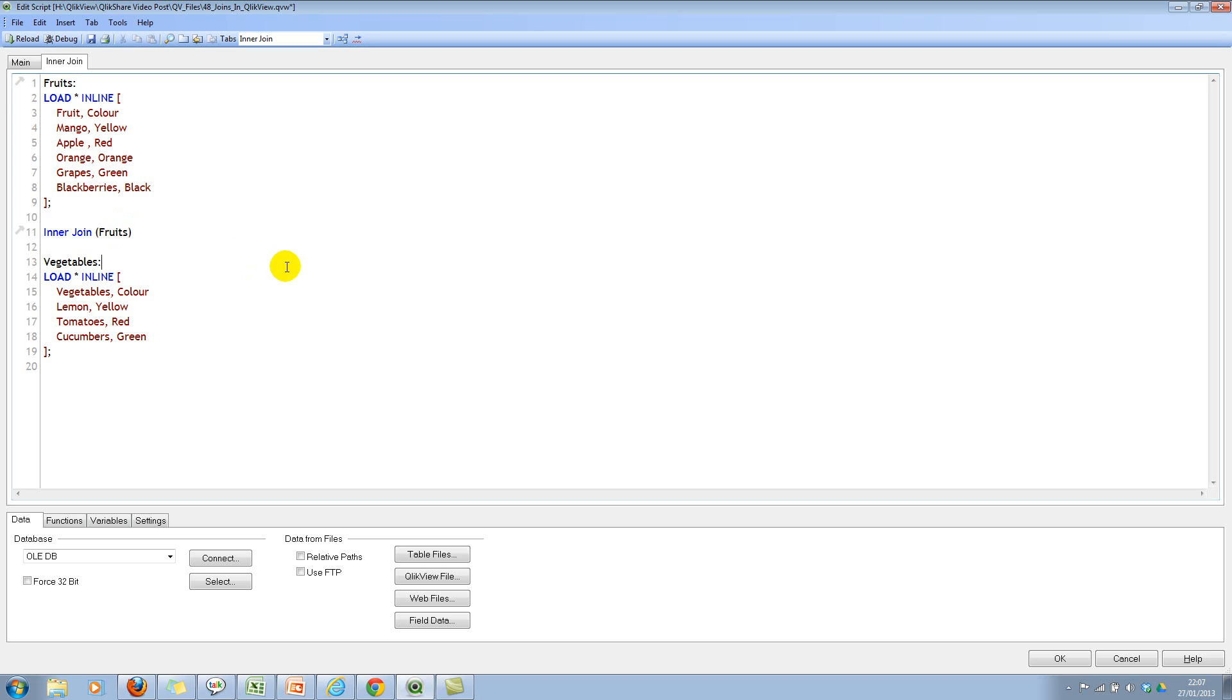Specify the left table, which is fruits, so QlikView doesn't need to do some guesswork. We have different fruits here: mango, apple, orange, grapes, and blackberries (my favorite ones). We have different colors as well. Let's go ahead and reload this.